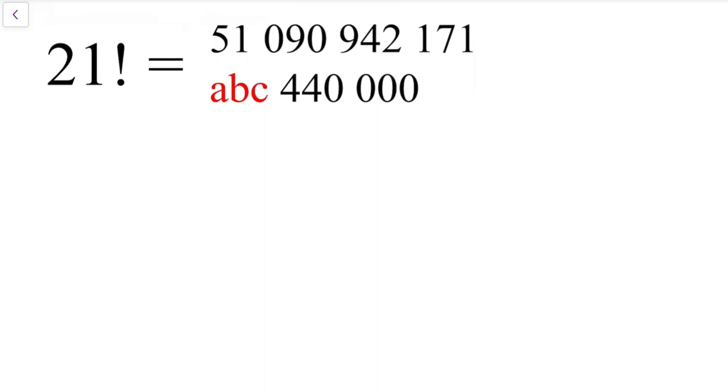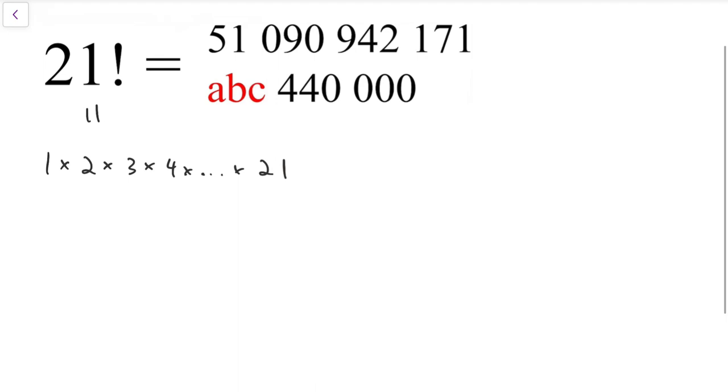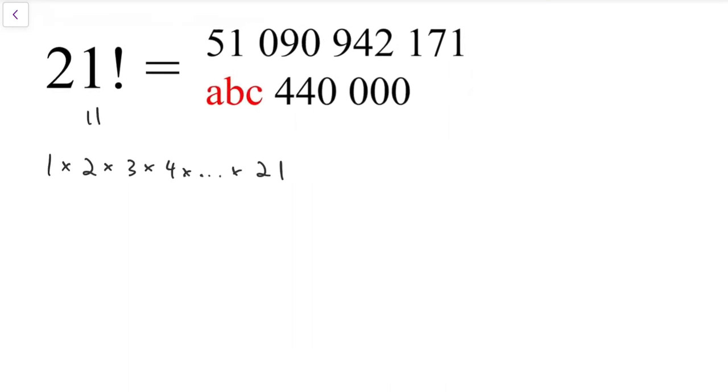Notice that 21 factorial by definition is equal to all numbers between 1 and 21 multiply together. And in particular, this chain of numbers contains 7, 11, and 13,